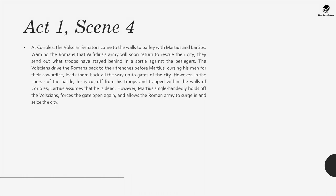Act 1, Scene 4: At Corioles, the Volscian senators come to the walls to parley with Martius and Lartius, warning that Aufidius's army will soon return to rescue their city. They send out troops in a sortie against the besiegers. The Volscians drive the Romans back to their trenches, before Martius, cursing his men for their cowardice, leads them back all the way up to the gates of the city. In the course of the battle, he is cut off from his troops and trapped within the walls of Corioles. However, Martius single-handedly holds off the Volscians, forces the gate open, and allows the Roman army to surge in and seize the city.